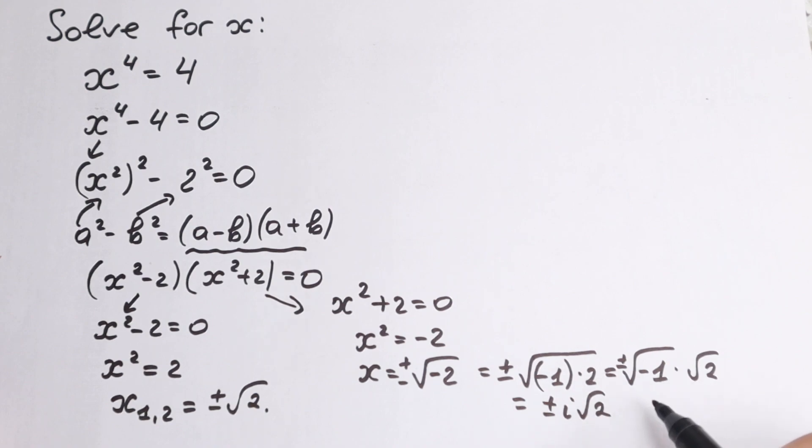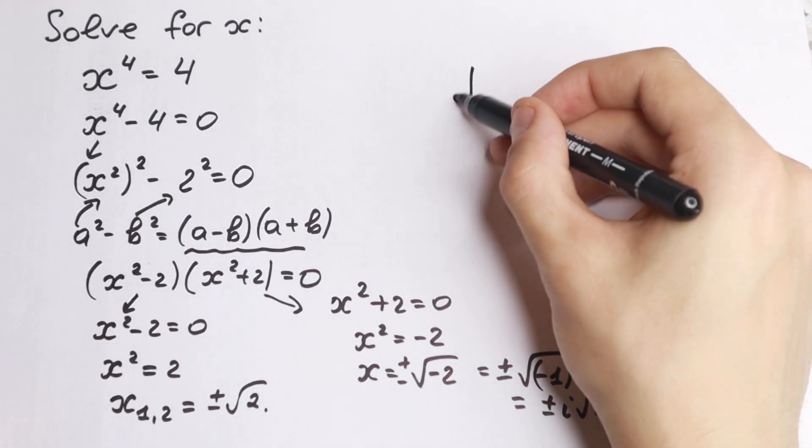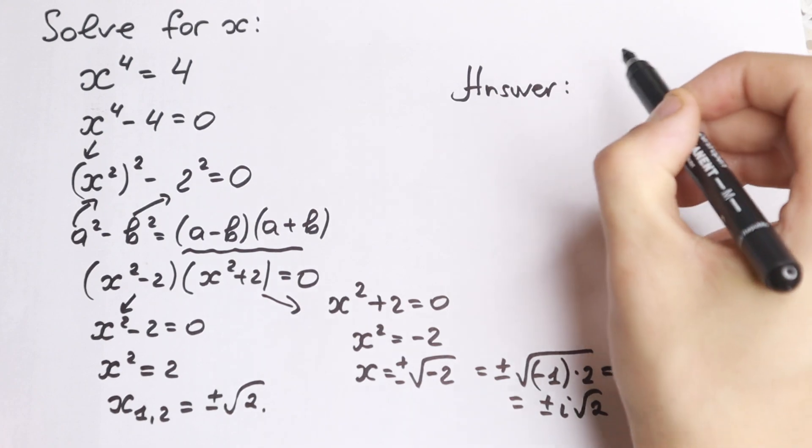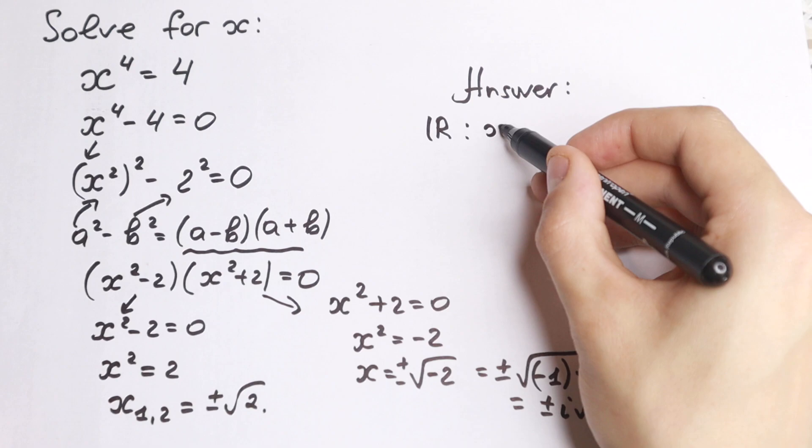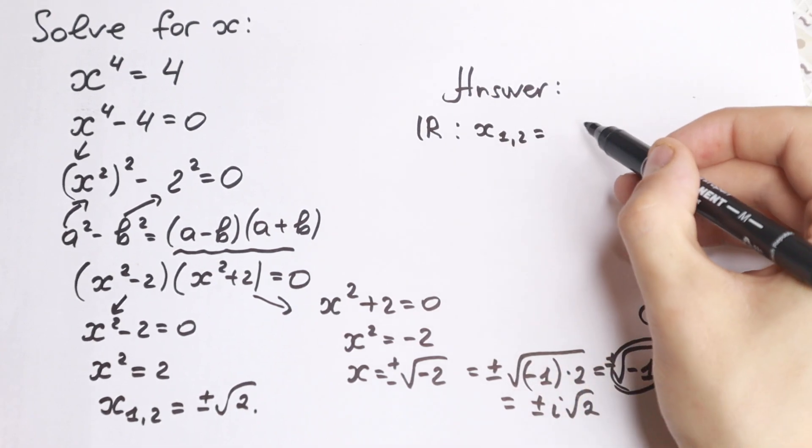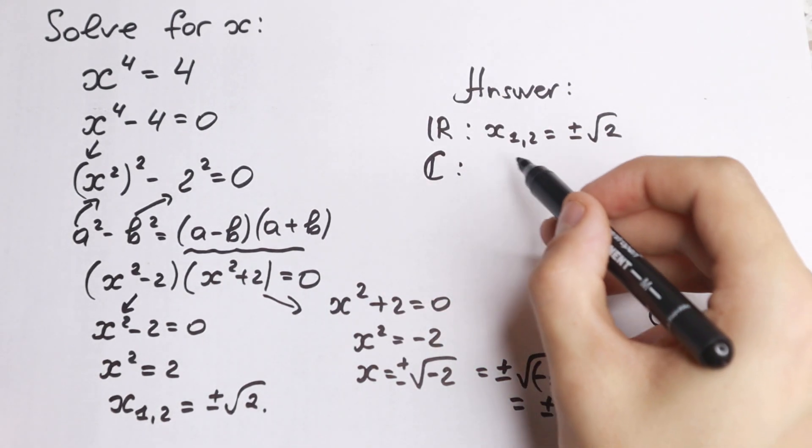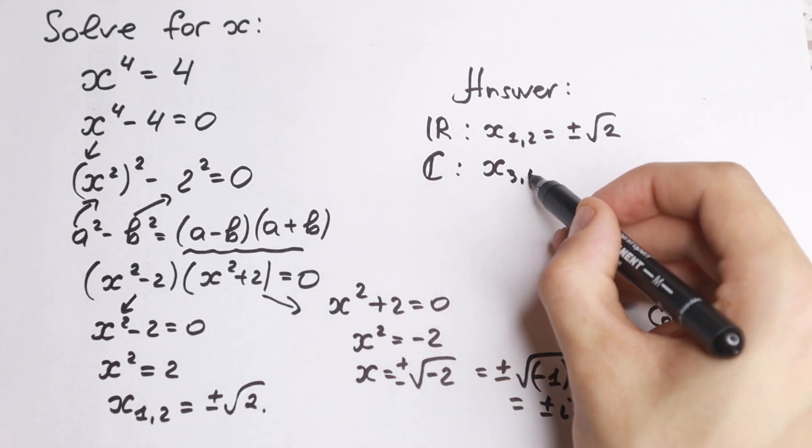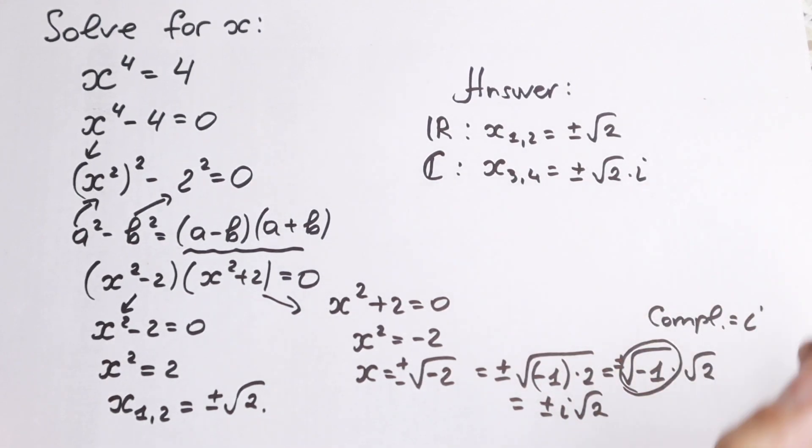This is our solution. So as a result let's write our final answer because square root of minus 1, this is a complex number equal to i. We will have the first pair is real numbers, x first and second equal to plus minus square root of 2. And complex we will have x third and fourth equal to plus minus square root of 2 times i. This is our full answer to this problem.